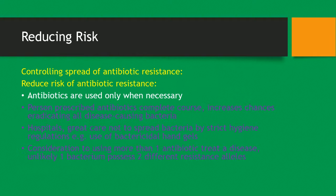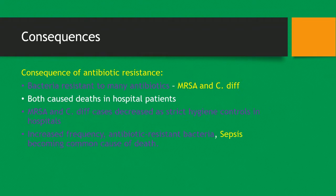How do you reduce the risk of antibiotic resistance? You should only use antibiotics when necessary. Persons prescribed antibiotics should complete their course, which increases the chances of eradicating all disease-causing bacteria. Hospitals must take great care not to spread bacteria by having strict hygiene regulations, such as the use of bactericidal hand gels, and should consider using more than one antibiotic to treat a disease, as it's unlikely one bacterium will possess two different resistance alleles. Consequences of antibiotic resistance include MRSA and C. diff, both of which have caused deaths in hospital patients. MRSA and C. diff cases have decreased due to strict hygiene controls in hospitals.